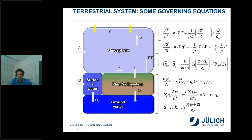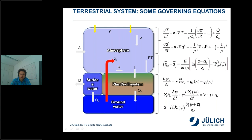This whole system is very complex and very nonlinear. Time scales are very different — fast in the atmosphere but very slow in groundwater — making this a very challenging problem to solve. We also have human intervention in the system, like pumping of groundwater. In Jülich we use the TSMP model for this.